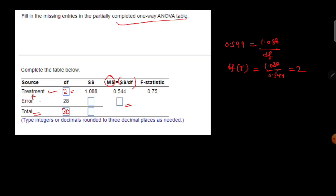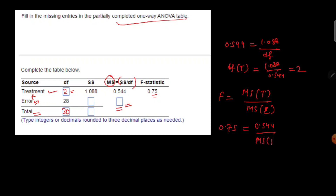Next, we're going to calculate the MS of error. We know that the F-statistic is basically the ratio of MS treatment and MS error. The F-statistic is 0.75 and the MS of treatment is 0.544, while the MS of error is the missing value.